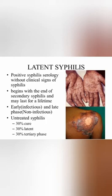Latent syphilis is divided into early and late latency. Early latent syphilis occurs within the first year after resolution of primary or secondary lesions, or with a reactive serologic test in an asymptomatic individual who had a negative serologic test within the preceding year. Latent syphilis is generally not infectious, except that a pregnant woman may transmit the infection to her fetus.